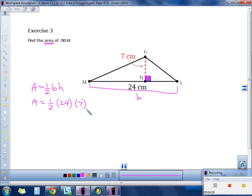Let's type that in and see what we get. 1 half times 24 times 7. What do we get? 84. And make it perfect. Centimeters squared.